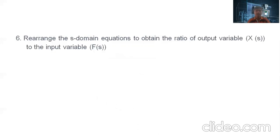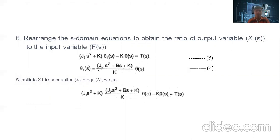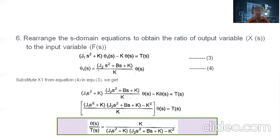Now we rearrange these Laplace domain equations to get the transfer function. Taking equations 3 and 4, substitute the expression for θ1(s) from equation 4 into equation 3. Then taking the ratio θ(s)/T(s), we get: θ(s)/T(s) = K / [(J1·s² + K)(J2·s² + Bs + K) − K²]. This is the desired transfer function of the given example.